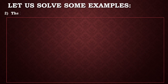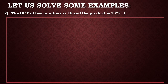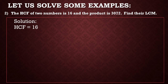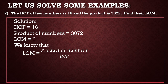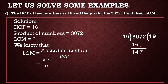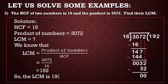Let us solve one more example. Question 2: The HCF of two numbers is 16 and the product is 3072. Find their LCM. HCF is equal to 16 and product of numbers is equal to 3072. We know that LCM is equal to product of the numbers divided by HCF. Put the value: 3072 divided by 16. Pause the video and do the division on your own. The answer is 192. So the LCM is 192.